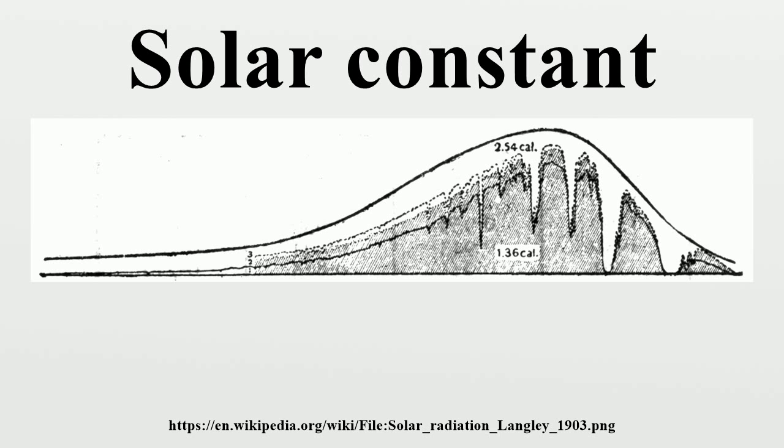Historical measurements: In 1838, Claude Poillet made the first estimate of the solar constant. Using a very simple peer heliometer he developed, he obtained a value of 1.228 kW per square meter, close to the current estimate.